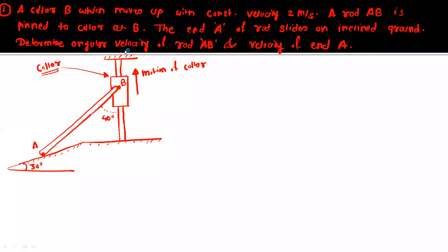Now we will solve a problem on general plane motion to understand how to apply the formula V = R × Omega. In this problem, a collar B moves with a constant velocity of 2 meters per second. Rod AB is pinned to the collar at point B — meaning it is connected by a pin joint or hinge joint.